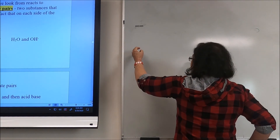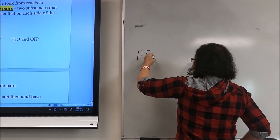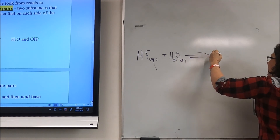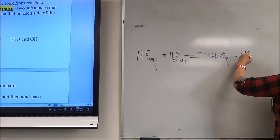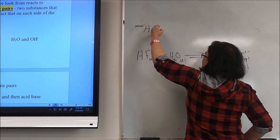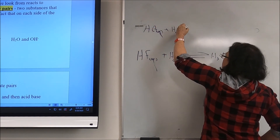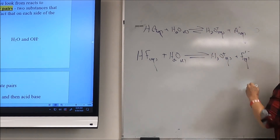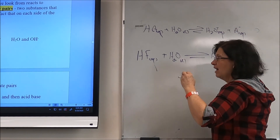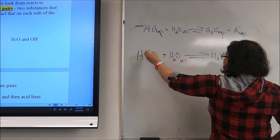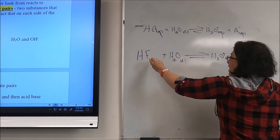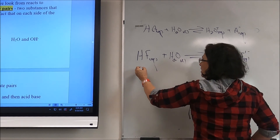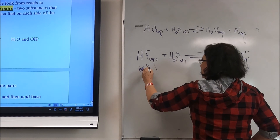Let's take a weak acid, something like HF aqueous in water. If it reacts with water liquid, then we get H₃O⁺ aqueous and F⁻ aqueous. The generic reaction is HA aqueous plus H₂O liquid going to H₃O⁺ aqueous and A⁻ aqueous. HF donates a hydrogen to the water to produce hydronium ion.